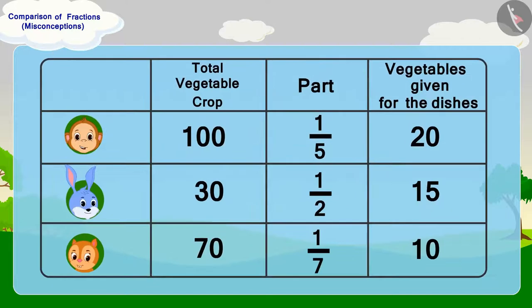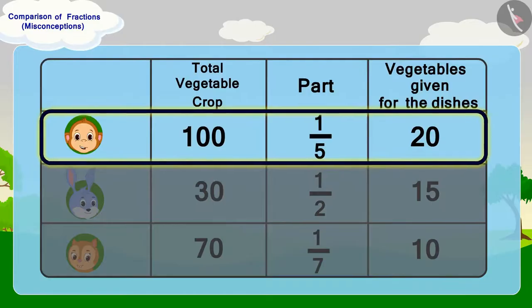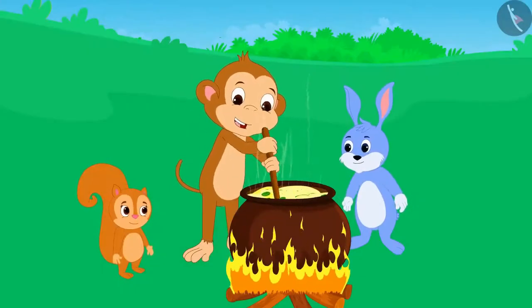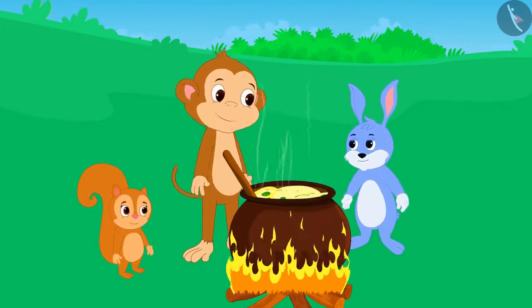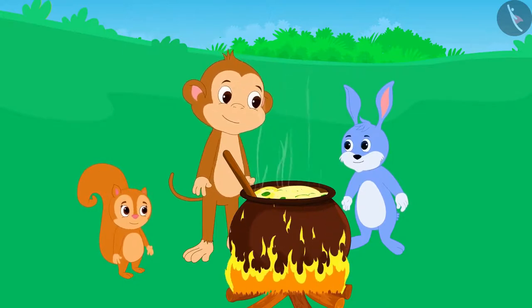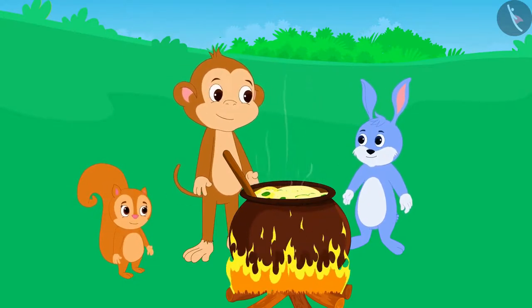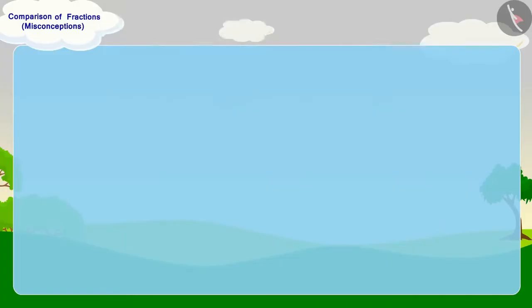Babban has said the right thing — he has given the most vegetables for the dish. Therefore, he should get the largest part of the dish. Babban explained this to Banni and Chandan in the same way, and both of them understood. But Babban said that he does not want the biggest share, and the three together happily shared equal portions of the dish and ate it with fun.